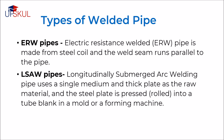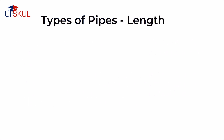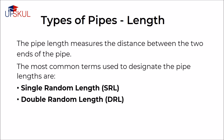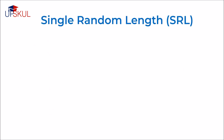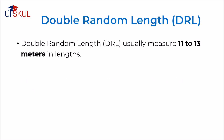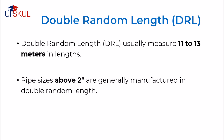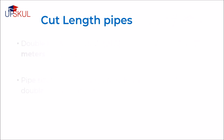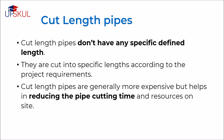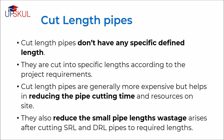The pipe length measures the distance between the ends of the two pipes. The most common terms used to designate the pipe length are single random length, double random length, and cut length. Single random length usually measures 5 to 7 meters in length, and pipe sizes below 2 inches are generally manufactured in single random length. Double random length usually measures 11 to 13 meters in length and pipe sizes above 2 inches are manufactured this way. Cut length pipes do not have any specified defined length — they are cut into specific lengths according to the project requirements. Cut length pipes are generally more expensive but help in reducing pipe cutting time and resources on site, and also reduce the small pipe length waste that arises after cutting single and double random length pipes.